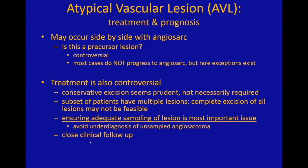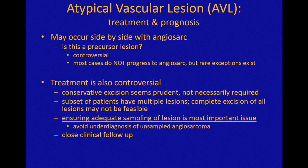I do recommend close follow-up for patients with AVL. It's a good idea to make sure they get screened often just to make sure there are no new vascular lesions developing. Sometimes patients have multiple AVLs — 30, 40, 50 of them. It's been described, and in those cases you obviously cannot completely excise all of those — it wouldn't be feasible. Close follow-up for those patients is important.